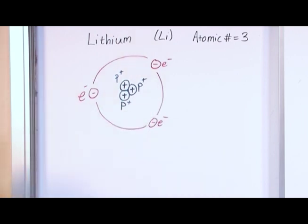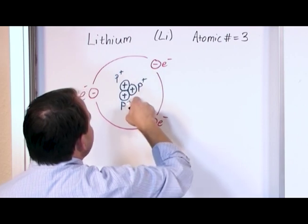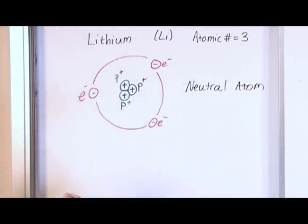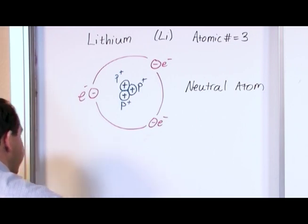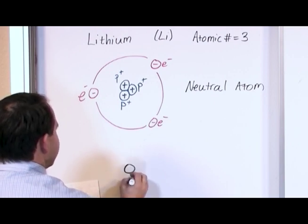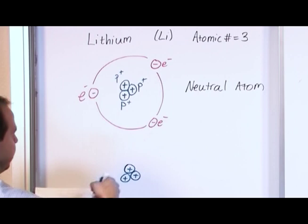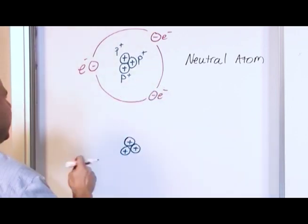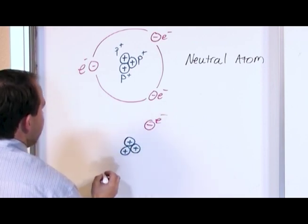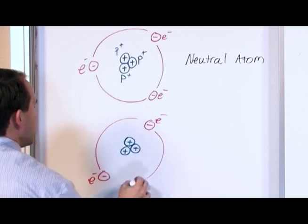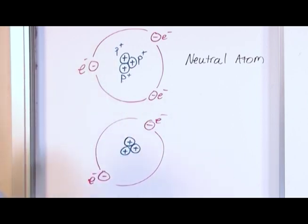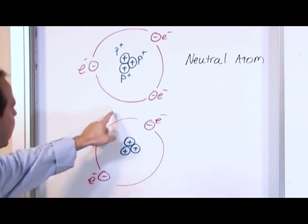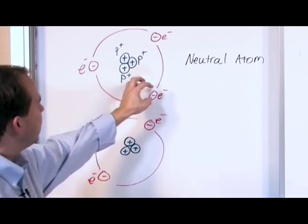We have three protons and three electrons, so it's neutral. Now let's redraw this and say we still have the three protons in the center, but let's say I reach my magic hand in here and grab one of these electrons and pull it away — just yank it out of the atom. What I'm going to have left is one electron here and one electron here. I've removed one electron, but I still have two left. So I have three protons and two electrons orbiting.